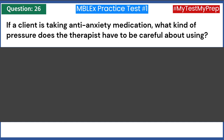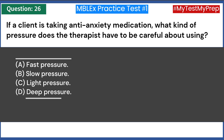If a client is taking anti-anxiety medication, what kind of pressure does the therapist have to be careful about using? A) Fast pressure. B) Slow pressure. C) Light pressure. D) Deep pressure. Answer: D — deep pressure.